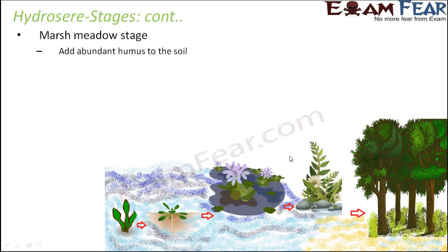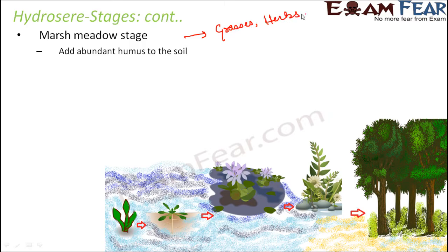After the reed swamp stage comes the marsh meadow stage. In this stage, grasses and herbs — small-sized plants — are seen. We are no longer talking about floating plants but plants on the surface of the soil. Examples of herbs seen here include polygonum and caltha. These herbs add abundant humus to the soil, increasing its fertility and building it up for the next stage.